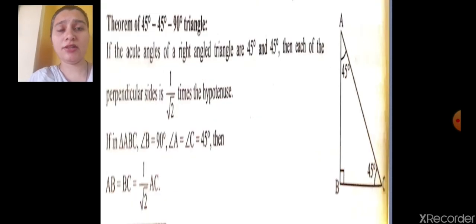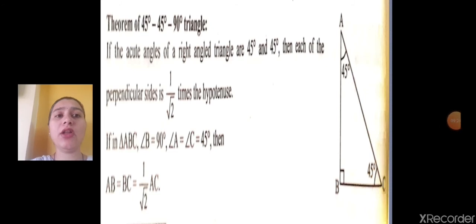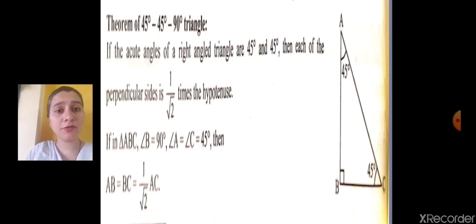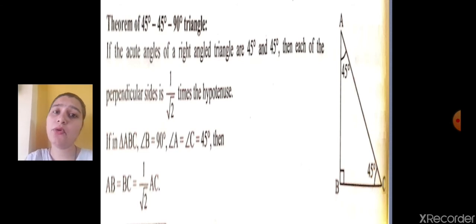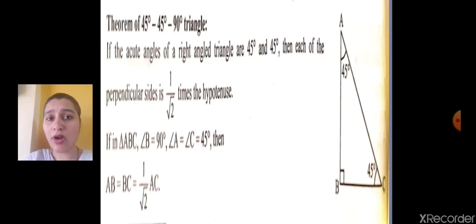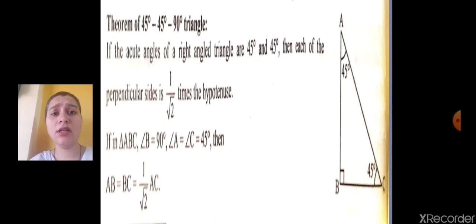Now for the 45-45-90 theorem. It is an acute angle triangle where both acute angles are 45 degrees. The side opposite to 45 degrees equals 1 upon root 2 into the hypotenuse. Since there are two 45-degree angles, both perpendicular sides AB and BC equal 1 upon root 2 into the hypotenuse. Make a note: 30 equals half, 60 equals root 3 upon 2, and 45 equals 1 upon root 2 — all multiplied by hypotenuse.